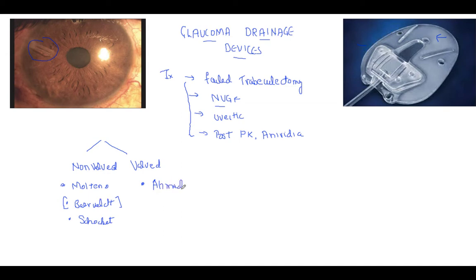In the valved tubes, you have to remember the Ahmed Glaucoma Valve. The difference is that in valved tubes, when the pressure goes down to eight or ten, the flow itself stops. But in non-valved tubes there is no restriction of flow.